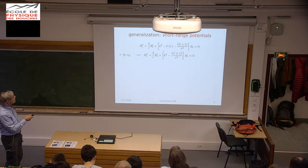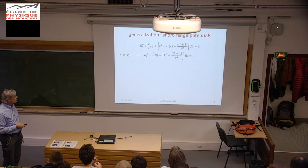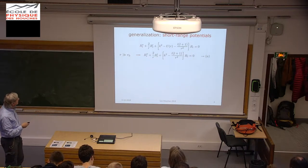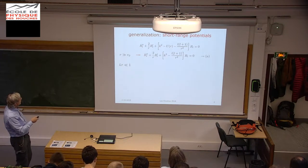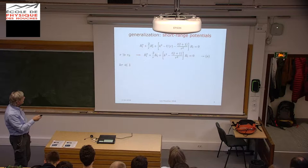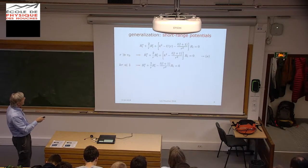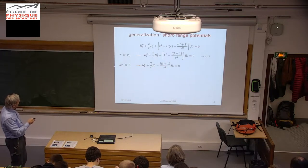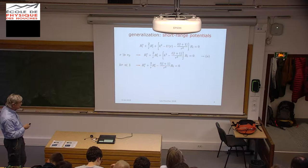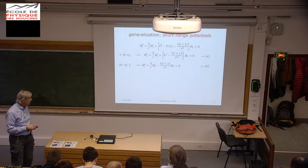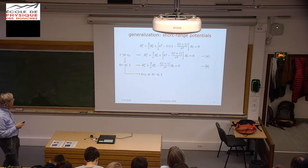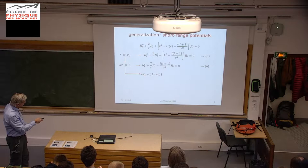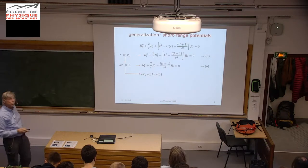So we know that for R much larger than R-naught, you can approximate your differential equation in this form—call this expression A. Now we are going to look at the case where k times R is much less than unity. That means the k-squared term can be neglected and your differential equation looks like expression B, where the k-dependence has dropped out. If you combine these two conditions, you can look at kr in the range where it is much larger than kR₀ but much less than unity, so that both equations are satisfied simultaneously.